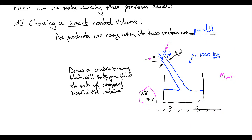Nothing makes me more upset than trying to grade a homework, quiz, or exam problem where a student did not draw a control volume but then tries to use a control volume in the problem and messes it up. We give points for demonstrating understanding, and if you don't draw a control volume when a control volume is the thing we're doing for the next couple of weeks, it's almost impossible to demonstrate the amount of understanding you actually have. So let's draw a couple different control volumes and talk about how bad they are.